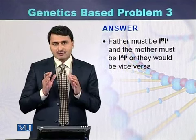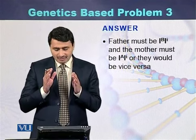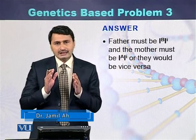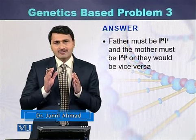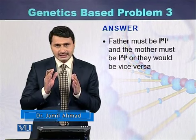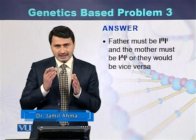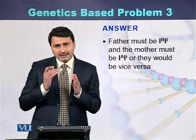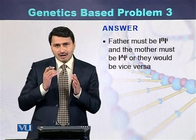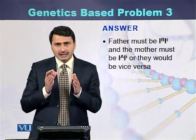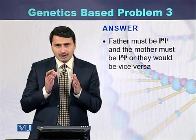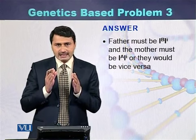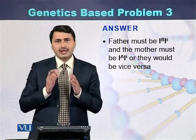So we can conclude that for a child to have blood group O, both parents must be heterozygous — either the father is heterozygous for A or the mother is heterozygous for B, or vice versa. When both parents are genotypically heterozygous, their child can have blood group O.